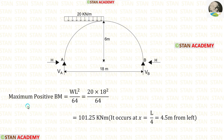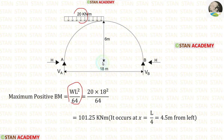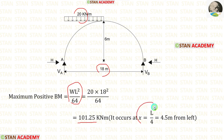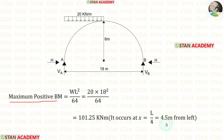Alternatively, using the formula derived in the previous video: maximum positive BM = wl²/64, with w = 20 and l = 18, we get 101.25 kNm. The location is given by x = l/4 = 18/4 = 4.5 metres. So the maximum positive bending moment of 101.25 kNm occurs at 4.5 metres from the left support.